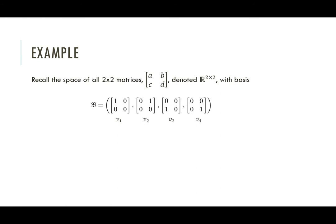Remember from the last video, and definitely from class, the space of 2 by 2 matrices — matrices written ABCD — is denoted R2x2. Recall this space has a basis of four matrices. We can write ABCD as a linear combination of these basis vectors: A times vector 1 plus B times vector 2 plus C times vector 3 plus D times vector 4.